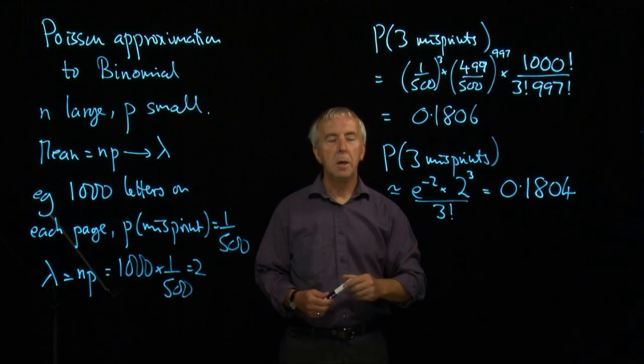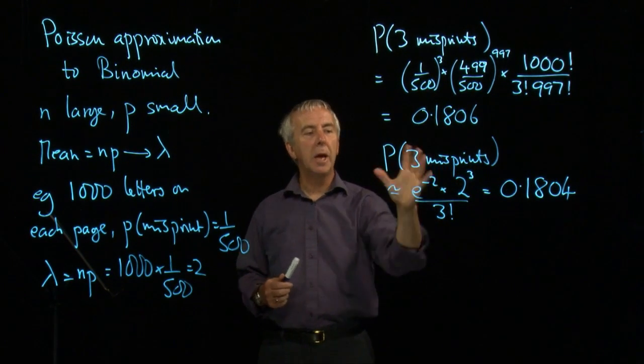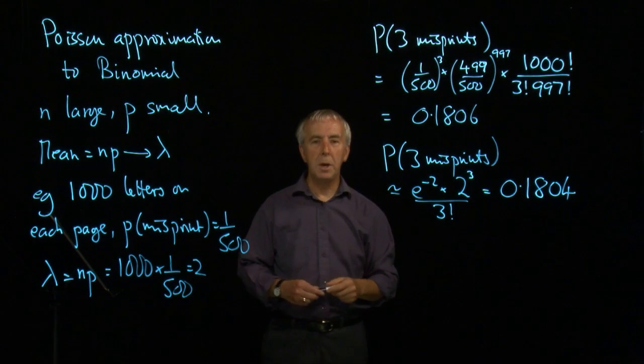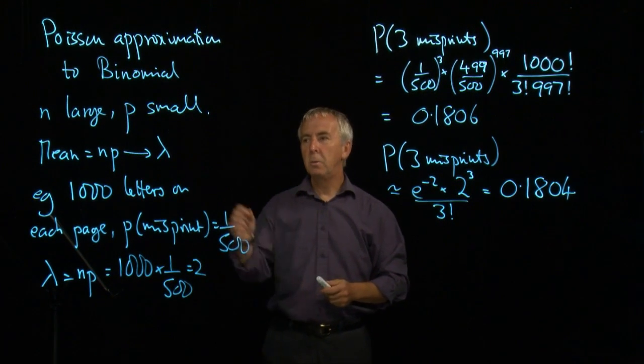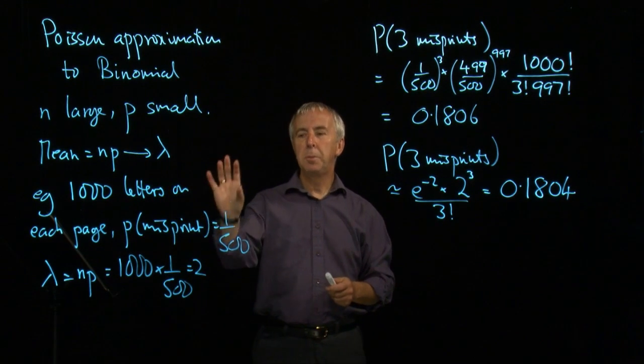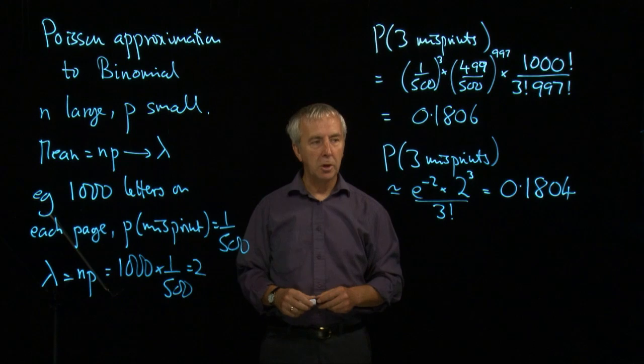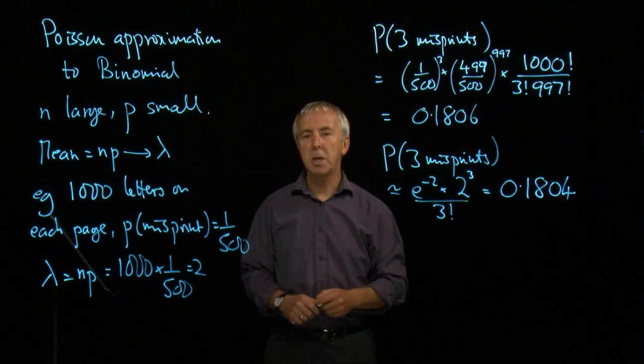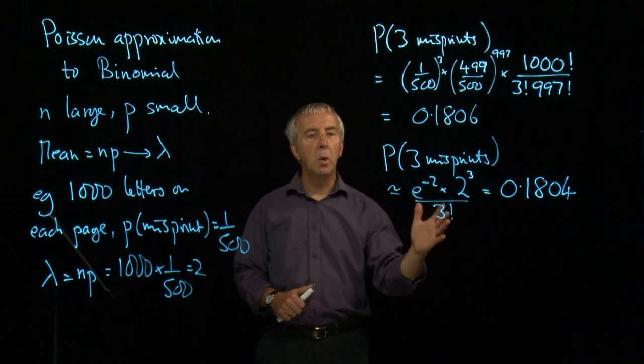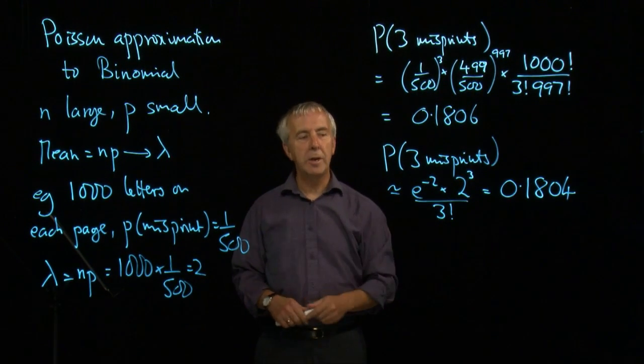So we can see that it's a very good approximation to the exact answer. The error is about 0.1 of a percent. But this is only valid when n is large and p is small, as we have in this particular situation. But when that is true, when those conditions are satisfied, this is a much quicker way of calculating probabilities than using the exact binomial.